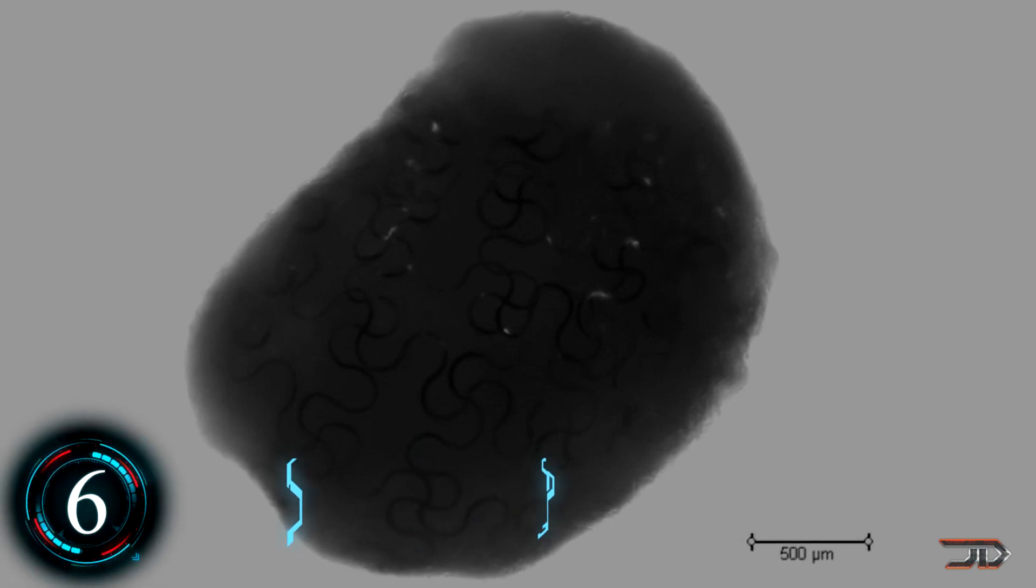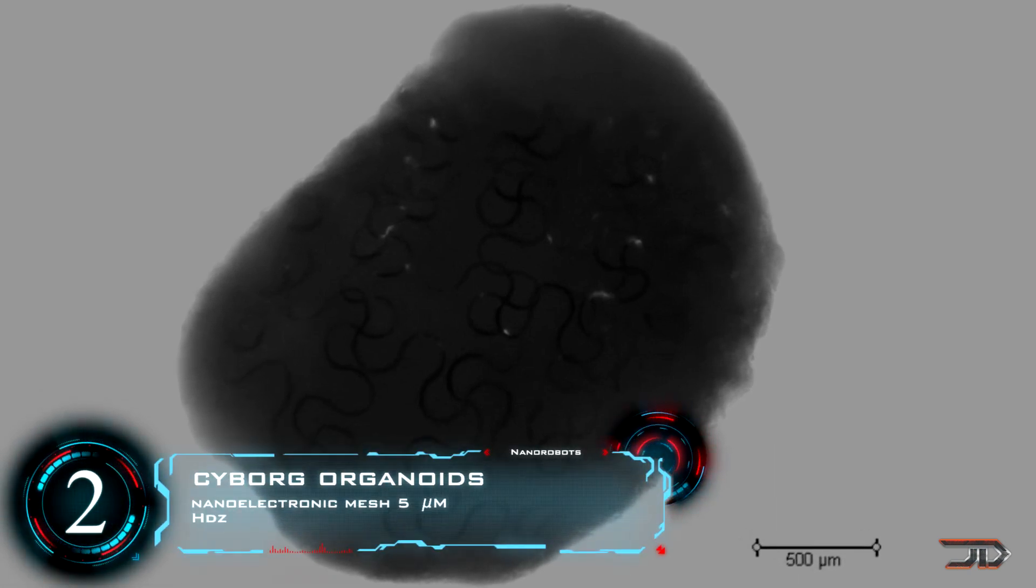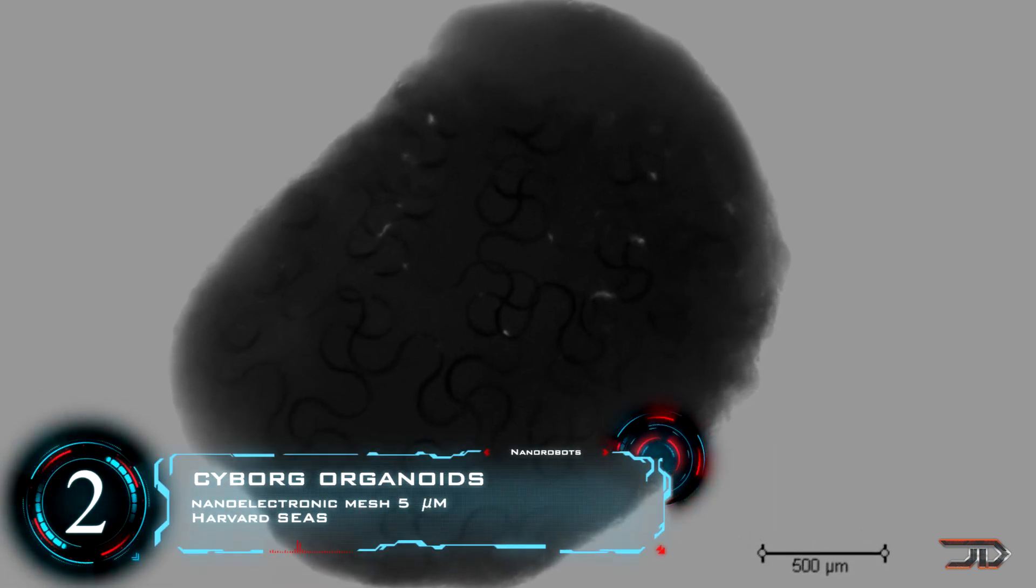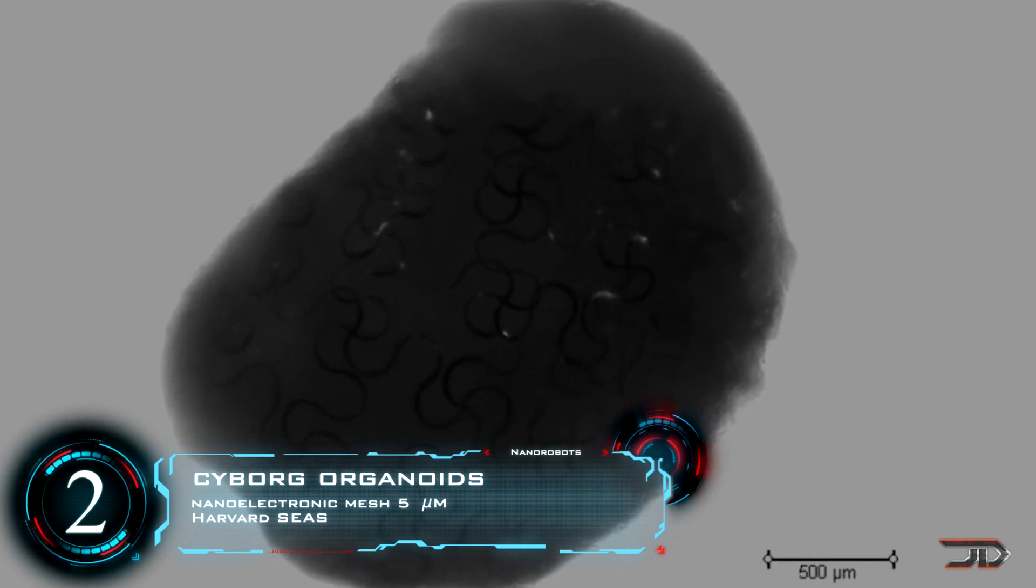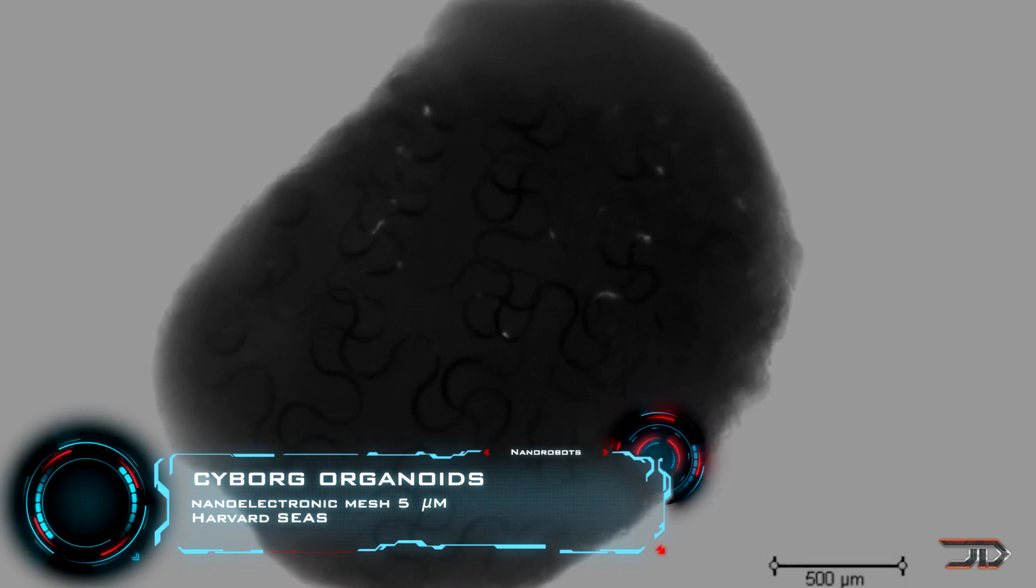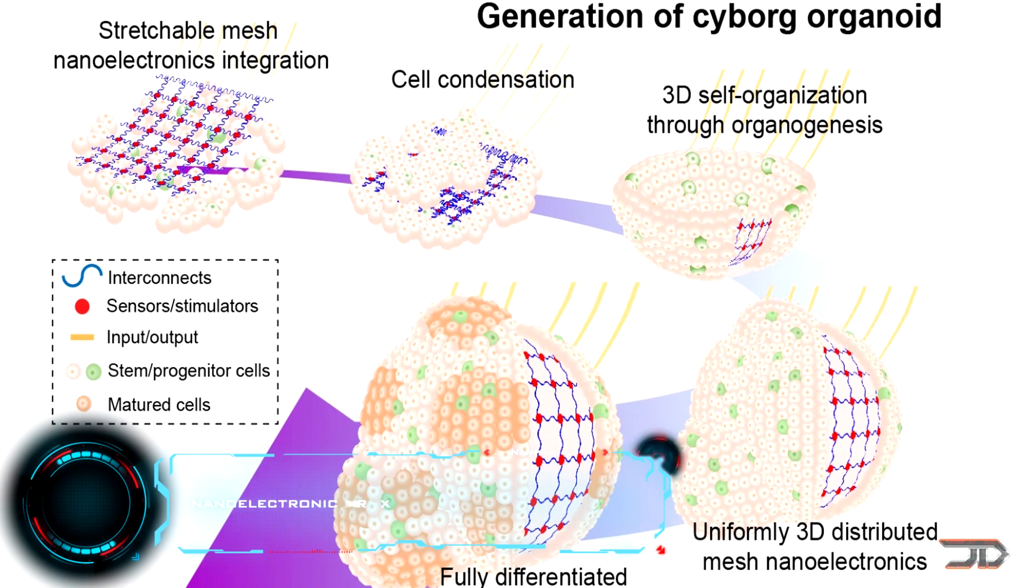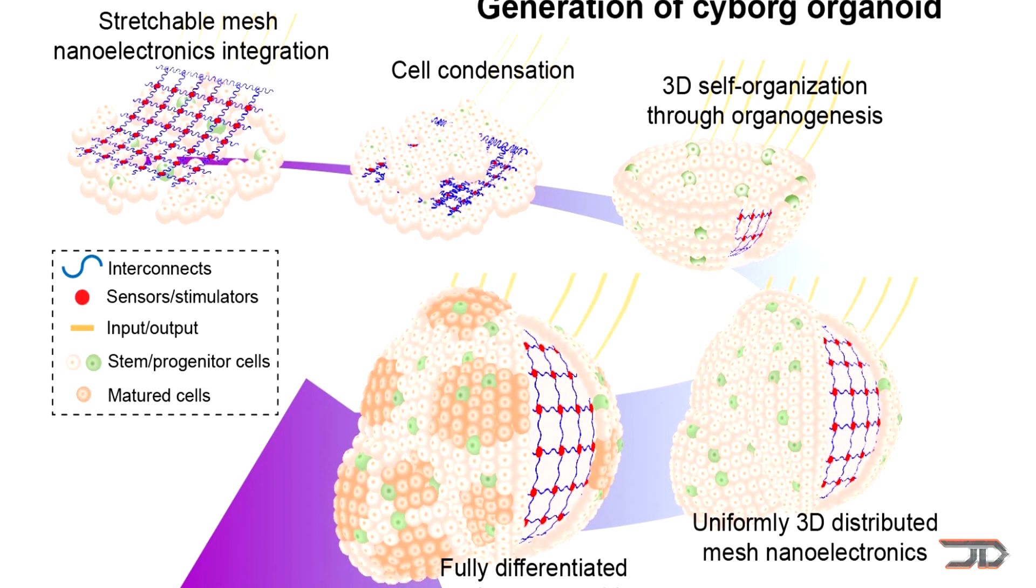We get to number two, and I guess you can call these cyborg cellular structures. These are basically hybrid cellular machines injected with nano electronics. The stem cell grows around the mesh, and a miniature biosensor is formed.